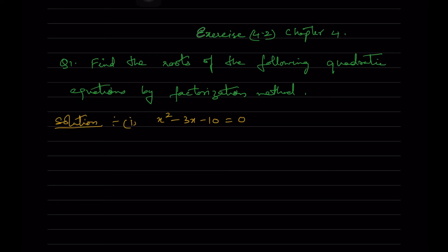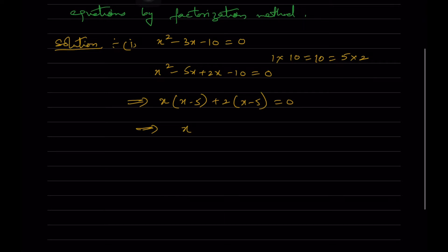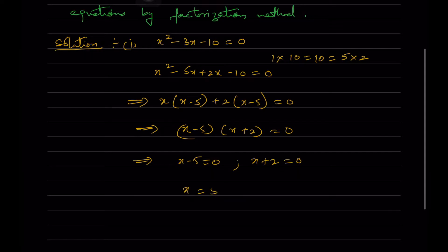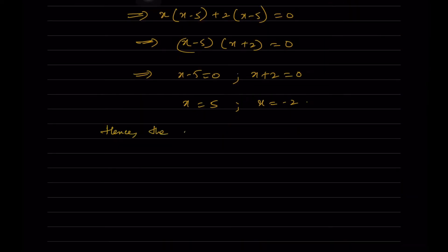So what are the factors of 10 such that we can get 3 as either addition or subtraction of them? 10 can be written as 5 × 2. So we write x² - 5x + 2x - 10 = 0, which gives x(x - 5) + 2(x - 5) = 0, which implies (x - 5)(x + 2) = 0. So x = 5 or x = -2.